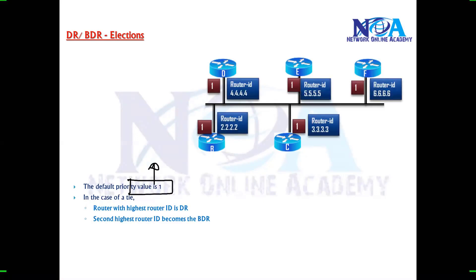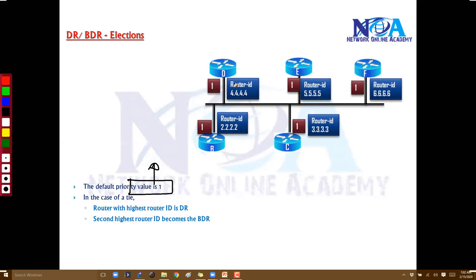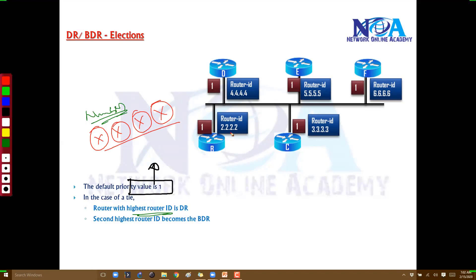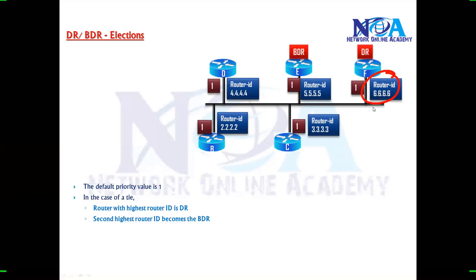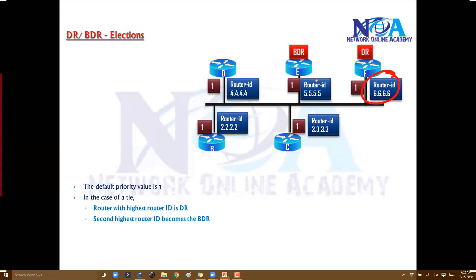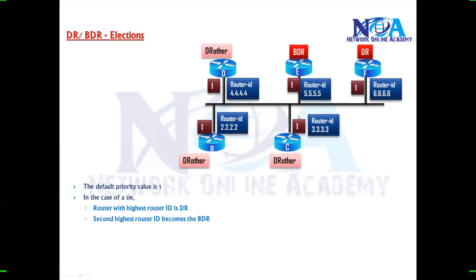The router with the highest router ID wins. Highest router ID means in terms of numbers — compare the first portion; if the first portion is the same, compare the second, then the third, then the fourth. In this example, using router IDs like 4, 5, 6, 2, 3 — the highest is 6, so router F will become the DR, and the next highest will become the BDR. You cannot have duplicate router IDs in an OSPF domain; they must be unique.